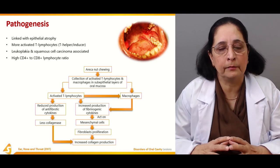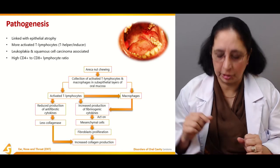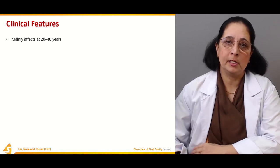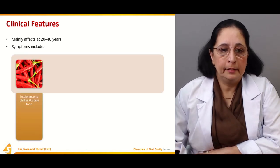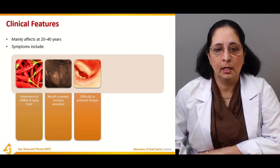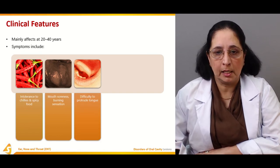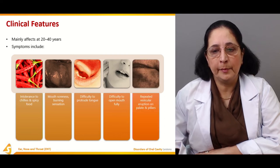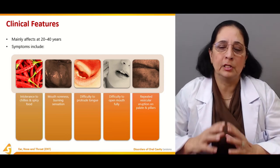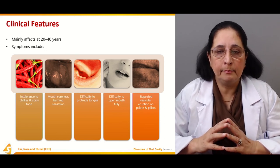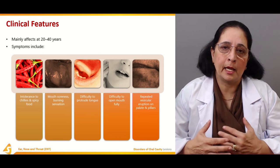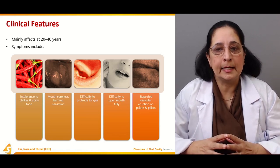That is the pathogenesis of the submucous fibrosis condition. Clinical features: it mainly affects people who are 20 to 40 years of age. Symptoms include intolerance to chilies and spicy food, mouth soreness, burning sensation, difficulty to protrude the tongue, difficulty to open the mouth fully, and repeated vesicular eruption on the palate and pillars.